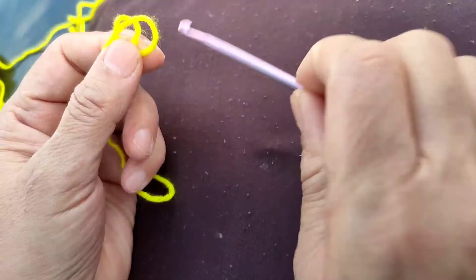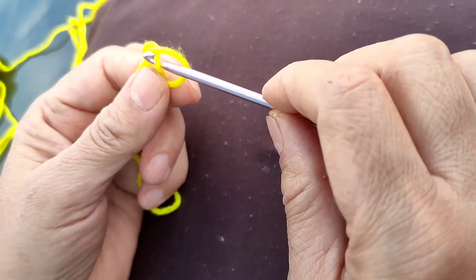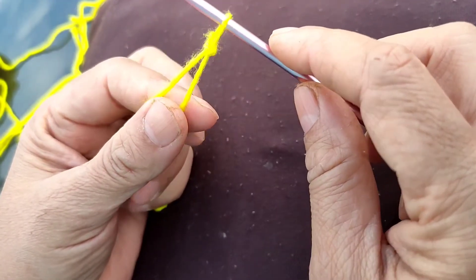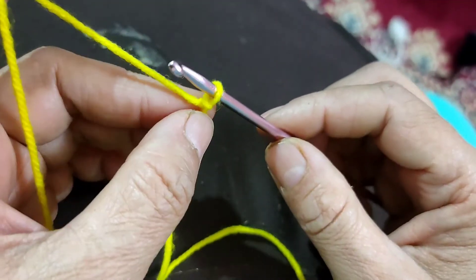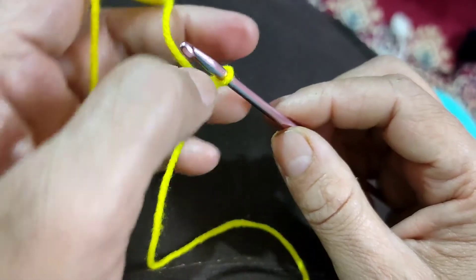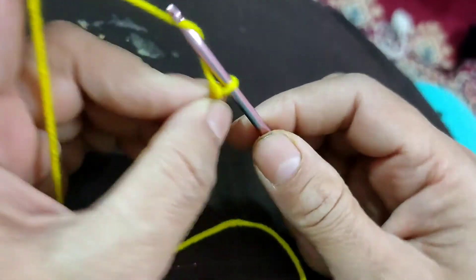Now in this loop, insert the hook and pull it through. Now you can see your knot is ready. This is the easiest way of making a knot. Now we will make a chain.